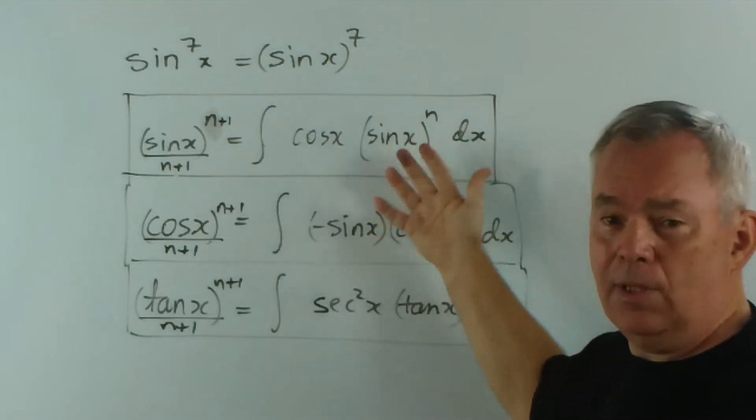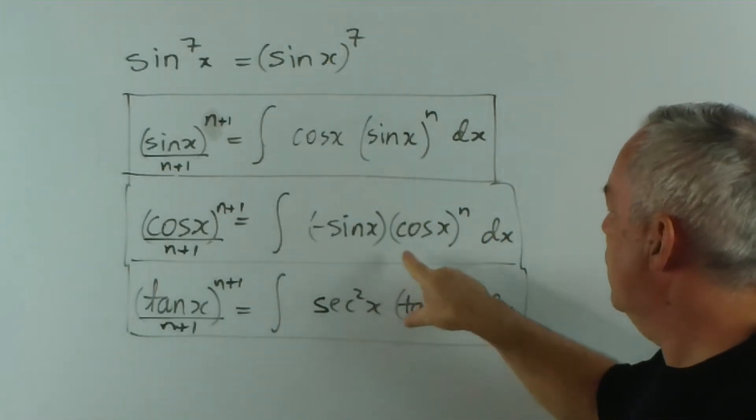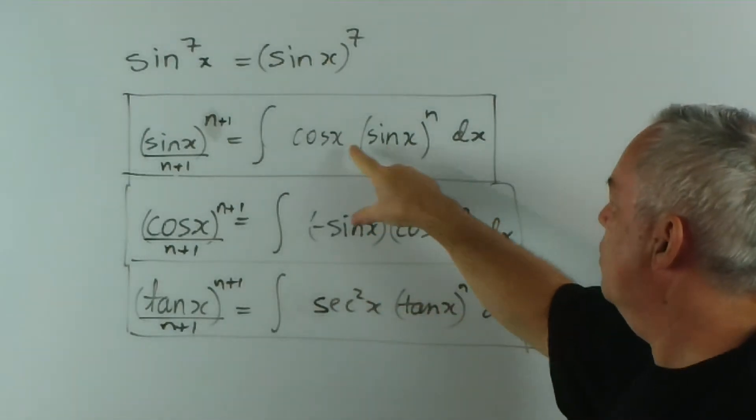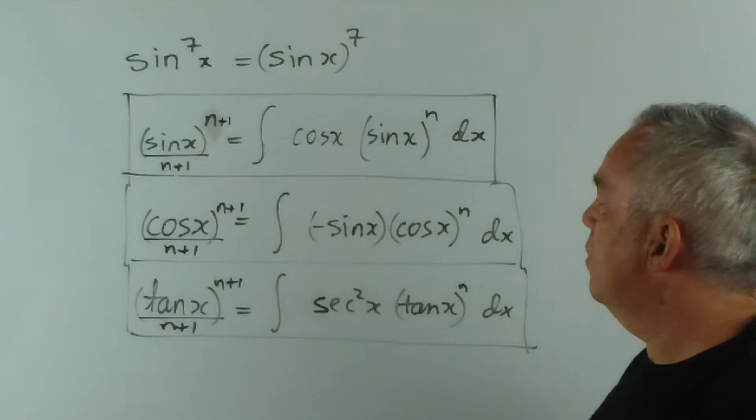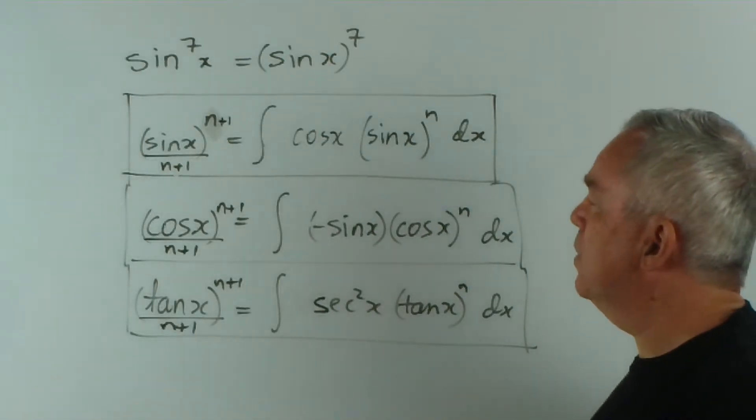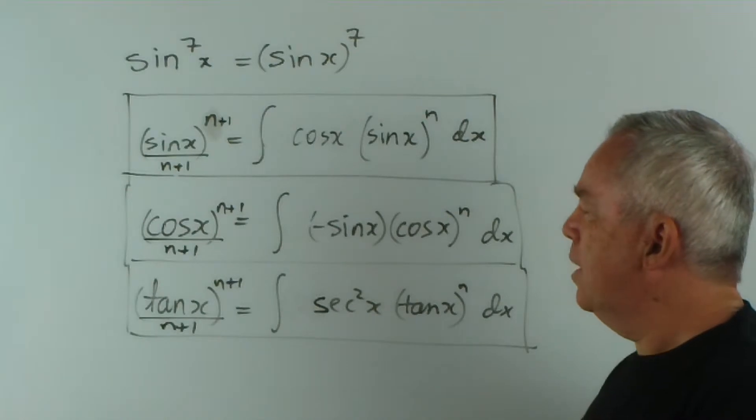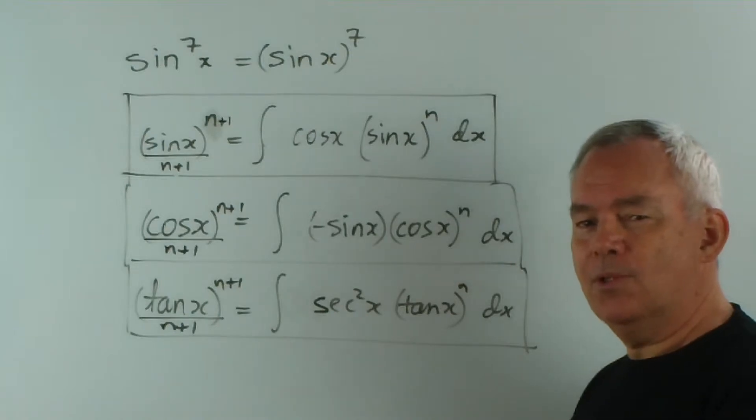And because they're so similar, I've treated them all together. We've just got to remember the derivative of tan is sec squared, the derivative of cos is minus sine, the derivative of sine is cos. That's the key we're looking for. So let's integrate a few expressions and see if we can recognize these patterns and put them to good use.